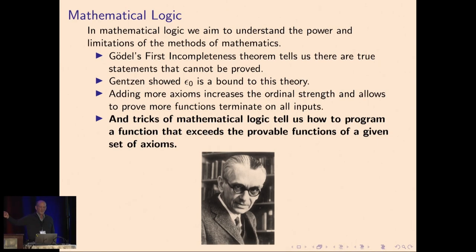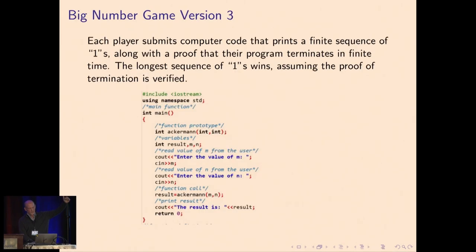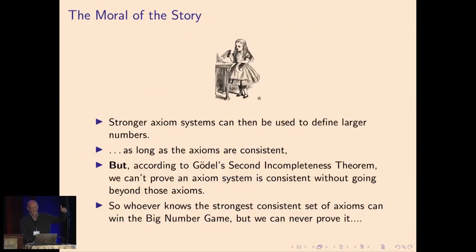The tricks of mathematical logic—I'll point out Gödel is the one who showed that there were these bounds, and Gentzen showed that ε₀ is the associated function. There are tricks of mathematical logic that allow us to reach those bounds, and we can then have the version of the game where you submit your code and then you have to submit a proof of termination. And then the question comes down to, can you prove that your program is going to terminate?